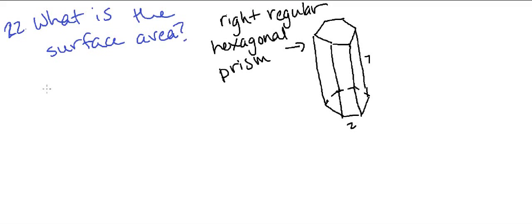Hey guys, so today we're dealing with a surface area problem. They told you that if you're given a right regular hexagonal prism with a width of 2 and a height of 7, what is the surface area going to be?